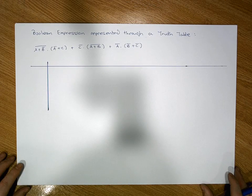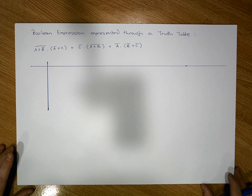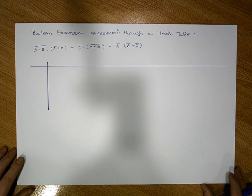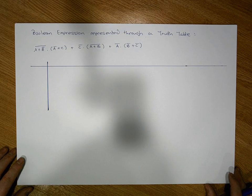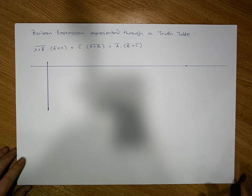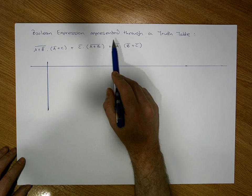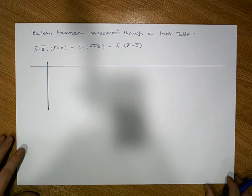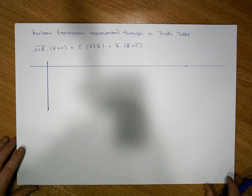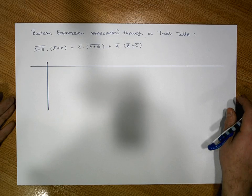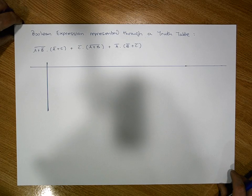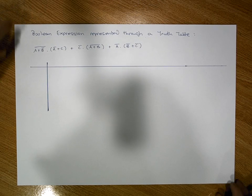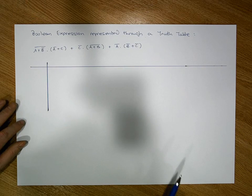Hi guys, this is Jonathan Lambert with the Mathematics Development and Support Service at the National College of Ireland. This short video, part of the series on boolean expressions, is going to walk through how to take a boolean expression and represent it through a truth table. This is the second video on how to represent a boolean expression as a truth table, so this is just another example to reaffirm what we've done previously.